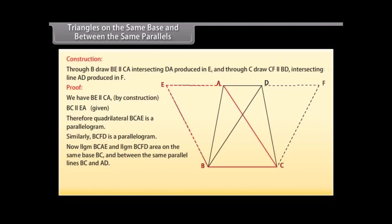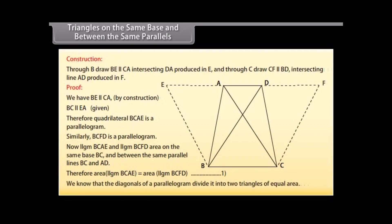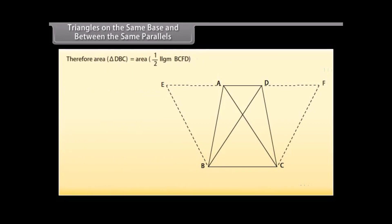Now, parallelogram BCAE and parallelogram BCFD are on the same base BC and between the same parallel lines BC and AD. Therefore, area of parallelogram BCAE is equal to area of parallelogram BCFD — mark it as 1. We know that the diagonals of a parallelogram divide it into two triangles of equal area. Therefore, area of triangle DBC is equal to half of area of parallelogram BCFD — mark it as 2.